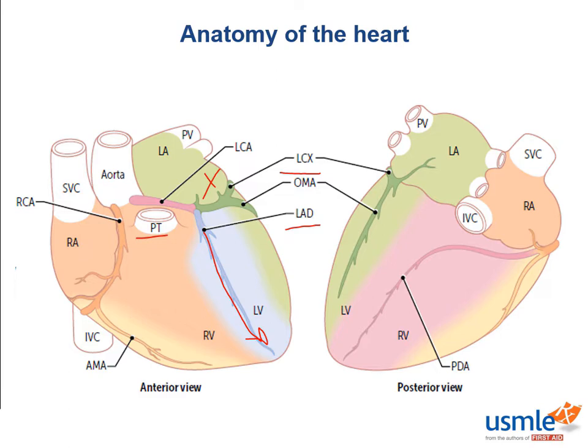When you're studying for Step 1, you should try to intuitively understand things based on the concepts that you've learned rather than relying on endless memorization. All of those things — anterior interventricular septum, anterolateral papillary muscle, and anterior surface of the left ventricle — should not surprise you because they are all anterior and this is the left anterior descending artery.